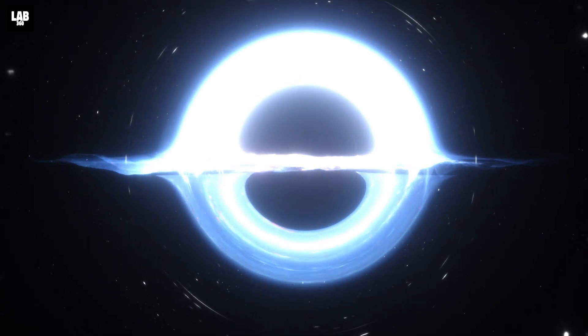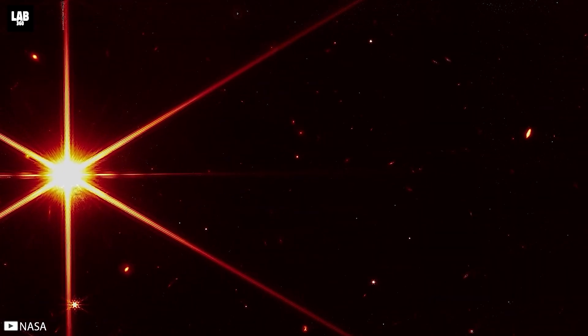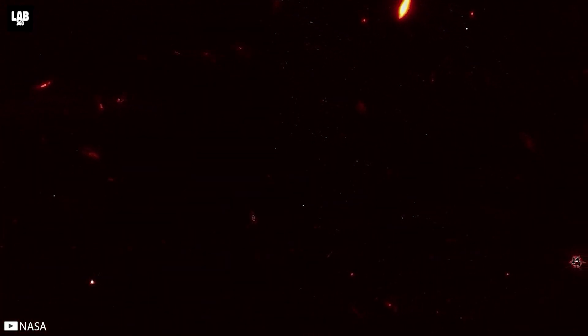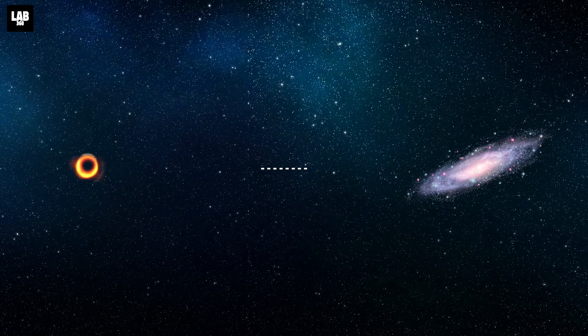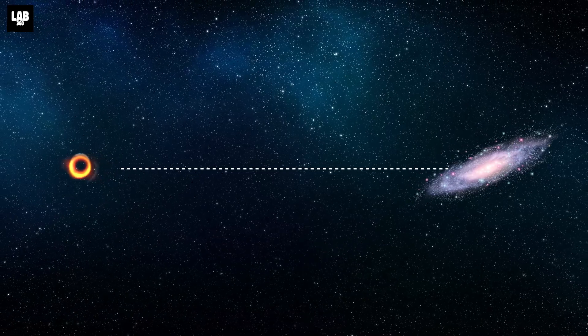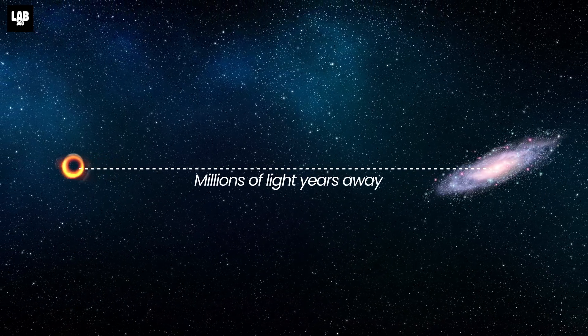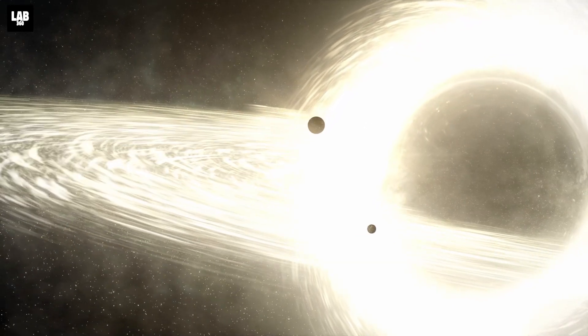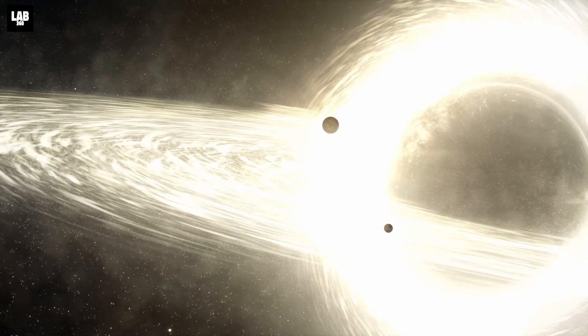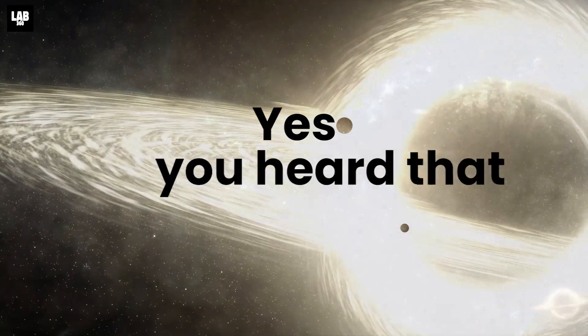The last time we informed you about a wandering black hole was when the JWST accidentally spotted one millions of light years away. That particular black hole doesn't pose any threat to our solar system, as it is far away from us. But now, we are here to tell you about this stellar black hole discovered in our galaxy. Yes, you heard that right.